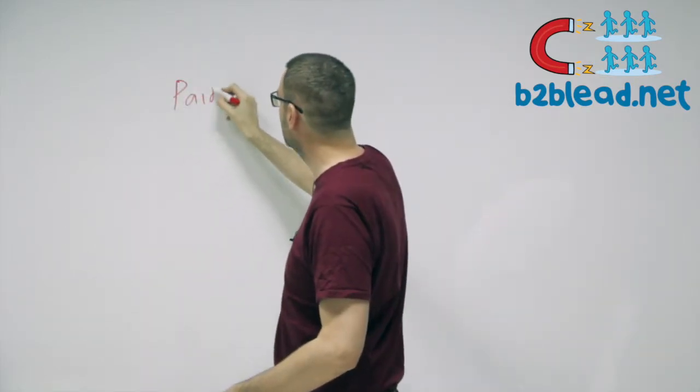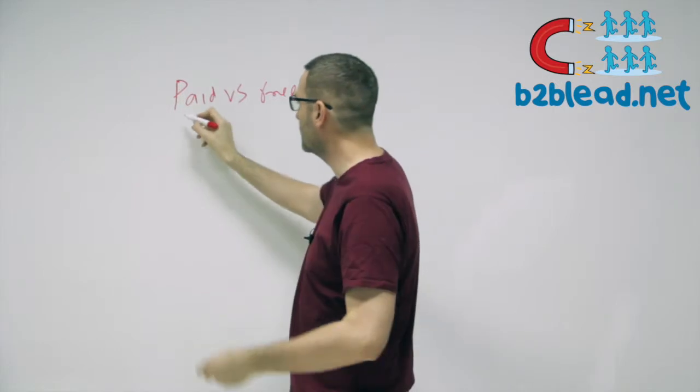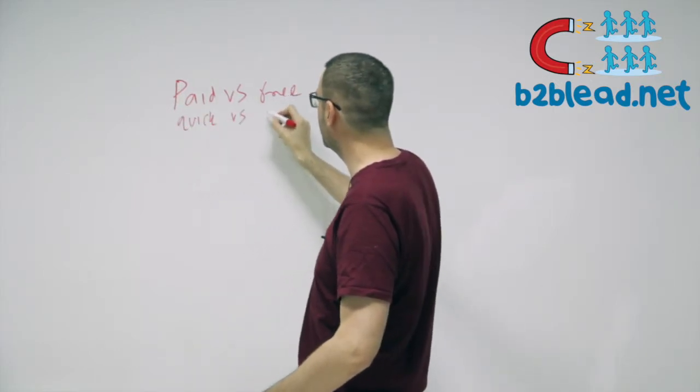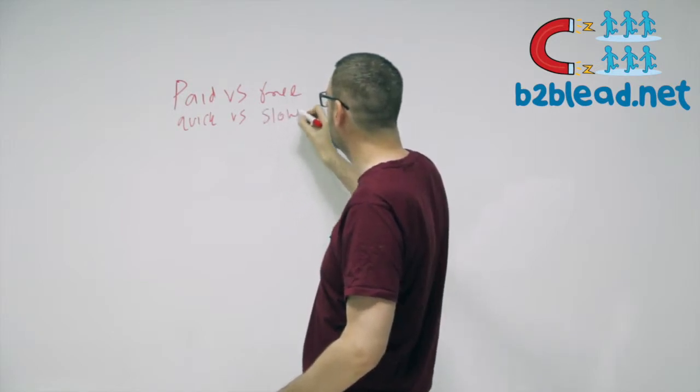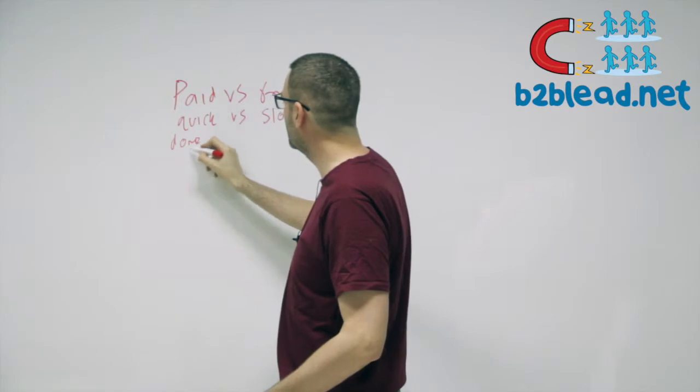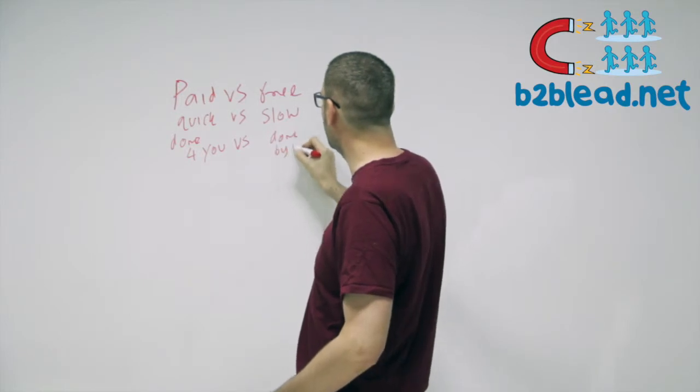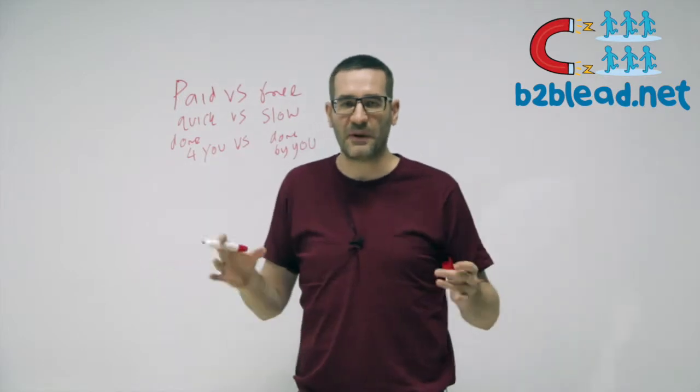Hi guys. So I'm going to try and condense the anatomy of lead generation in like 10 minutes. I'm going to burn through it really quickly. You've got different types of lead generation. You've got paid versus free, which is basically quick versus slow, or done for you versus done by you. That pretty much explains itself anyway.